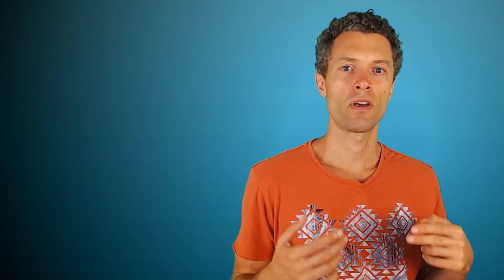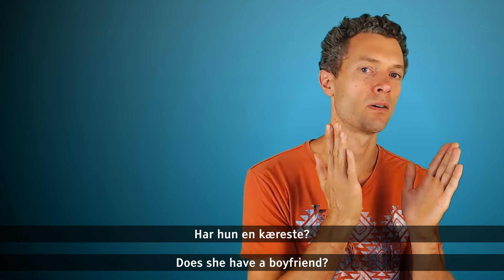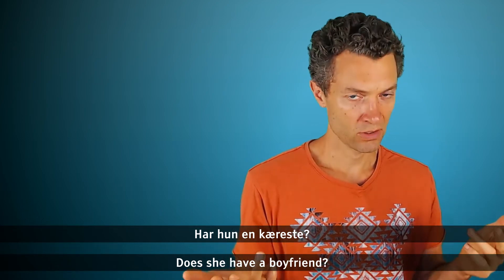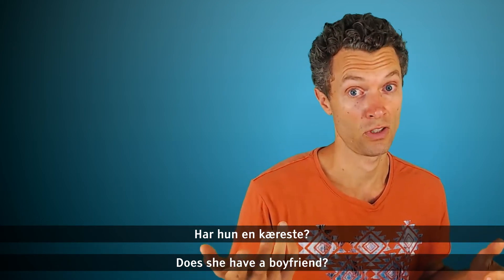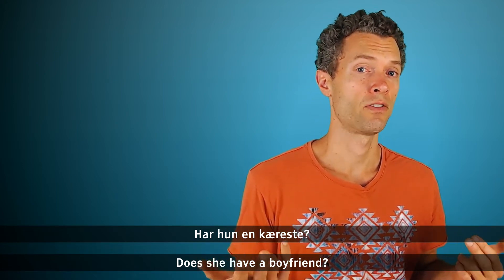Let's take one more run with another example and why don't you see if you can already answer correctly whether we use jo or ja, whether we use ik or vel for the right part. Let's try it. So let's take the example, does she have a boyfriend? Does she have a boyfriend? Normal question here. Har hun en kæreste? Har hun en kæreste? Again starting with the question with the verb. Normal questions start with the verb in Danish, in English as well. Does she have a boyfriend? And what is the answer? Is it ja or is it jo?